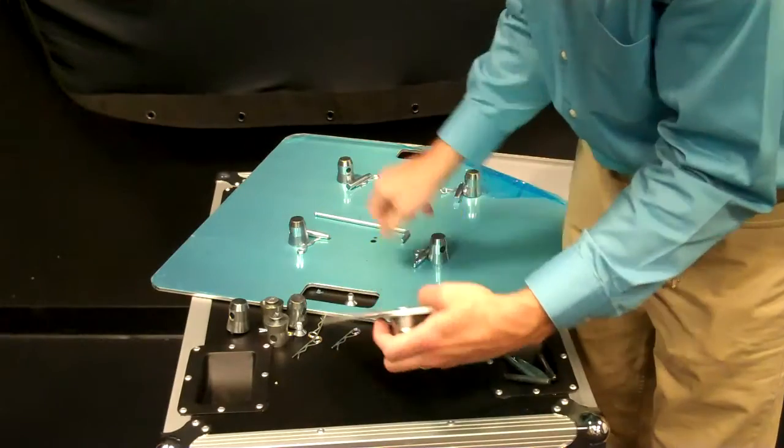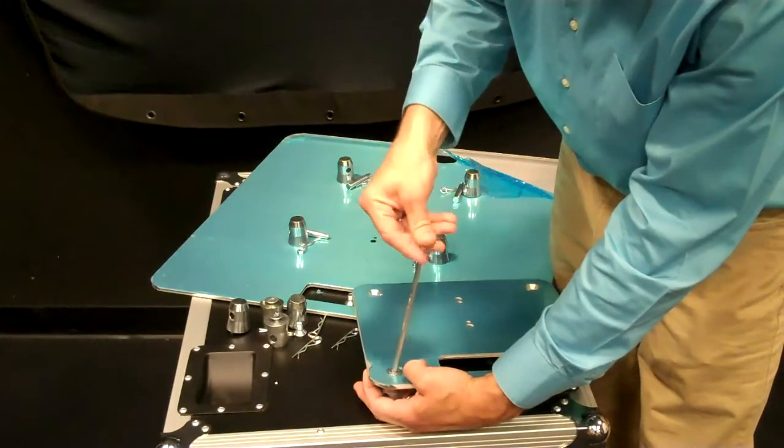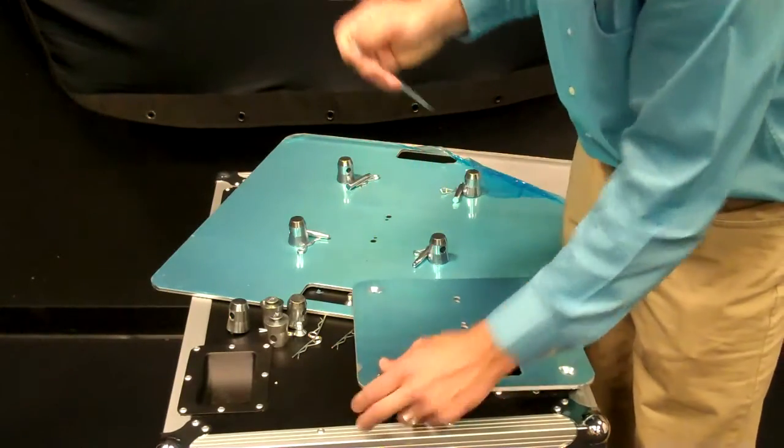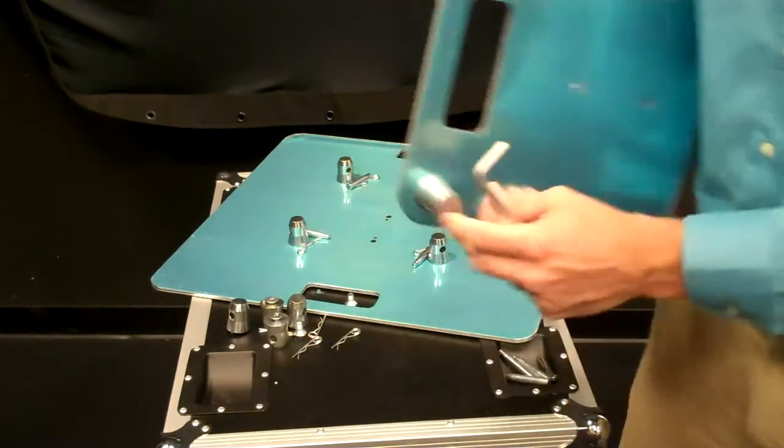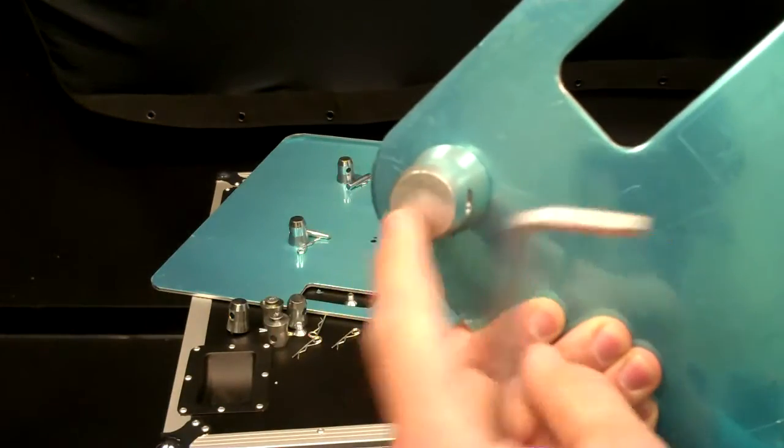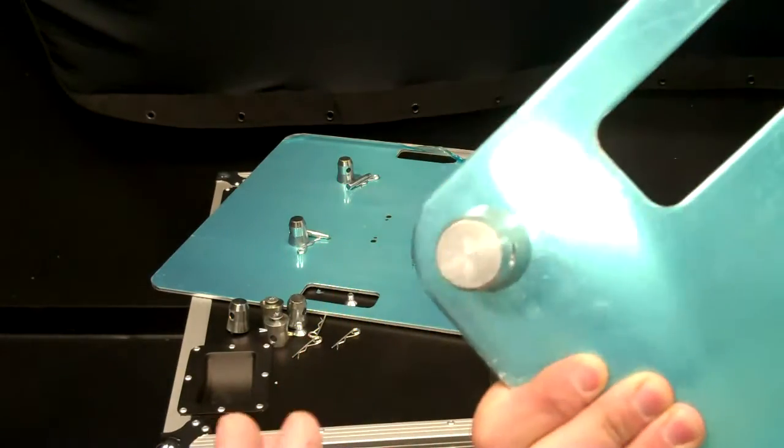This piece is going to go on the flat side and then the countersunk side is going to be where your screws are at. So basically you just screw in and then use your own wrench. One thing I recommend doing, just because you want these as tight as possible, you don't want any looseness here.